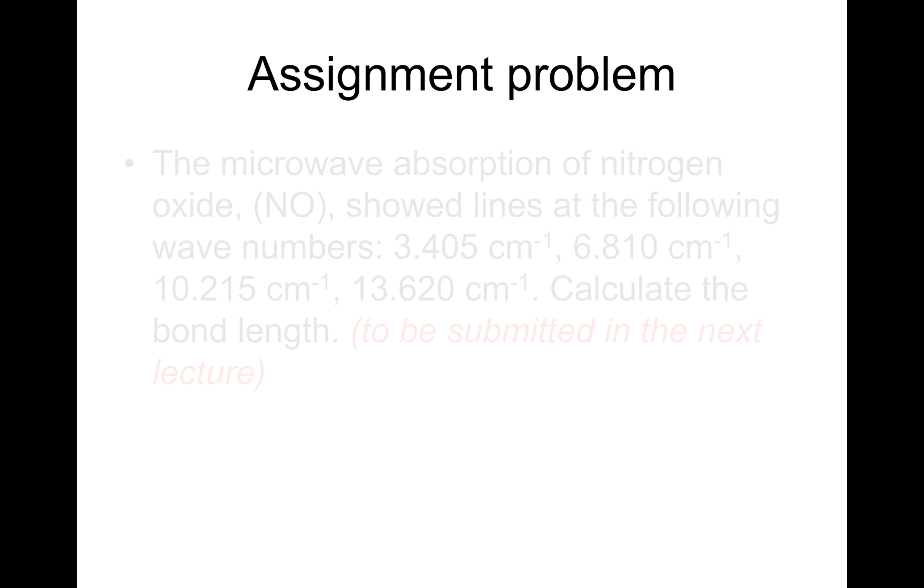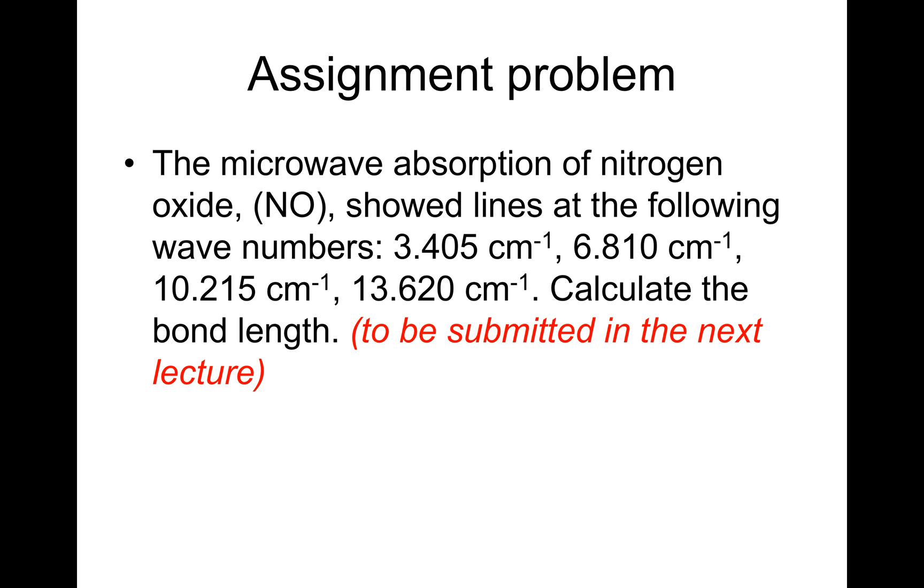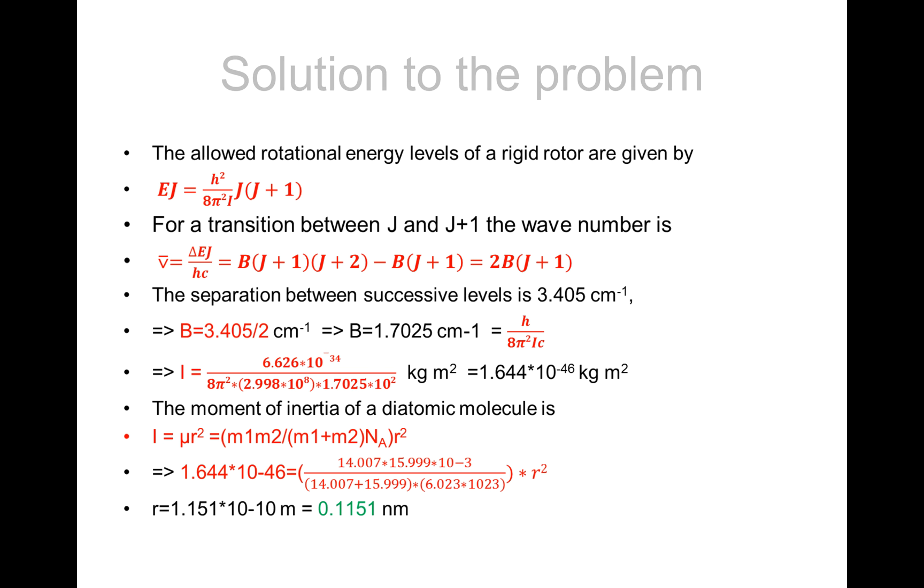Here's an assignment worth trying. The microwave absorption of nitrogen oxide NO showed lines at the following wave numbers: 3.405 cm⁻¹, 6.810 cm⁻¹, 10.215 cm⁻¹, and 13.620 cm⁻¹. Calculate the bond length. This could be submitted in the next lecture, or try it out and then look at the solution which is given below here.